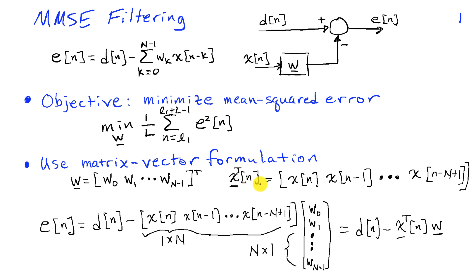Similarly, we'll collect the samples of the input signal X of N into a vector X of N, X of N minus 1 through X of lowercase n minus capital N plus 1, and again, the transpose indicates that X underscore of N is a column vector. If I define these vectors, then I can write the error in terms of the inner product between the X transpose of N vector and the W vector, and of course then I'm subtracting that inner product from D of N. So I'm going to write E of N as the difference between D of N and the inner product of the input times the filter coefficients.